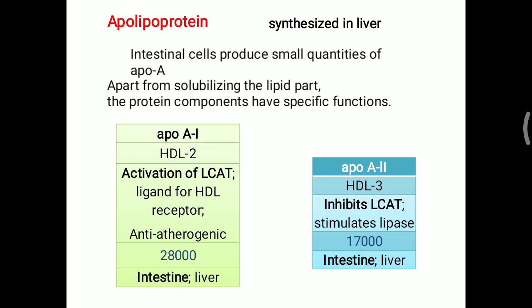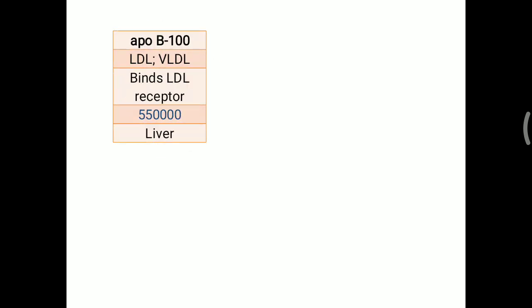Apo B100 is associated with LDL and VLDL and is responsible for binding to the LDL receptor. It has the highest molecular weight among apolipoproteins at 550,000 daltons, and it is exclusively produced by the liver.